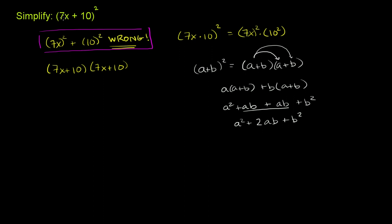So over here I have 7x plus 10 squared. So this is going to be equal to 7x squared plus two times the product of 7x and 10. Two times 7x times 10 plus 10 squared.